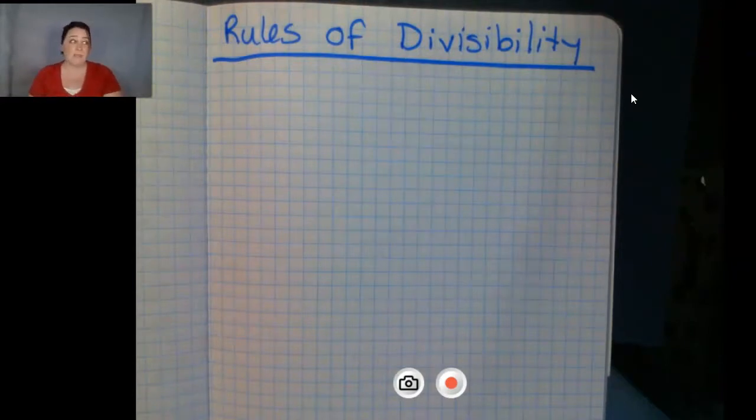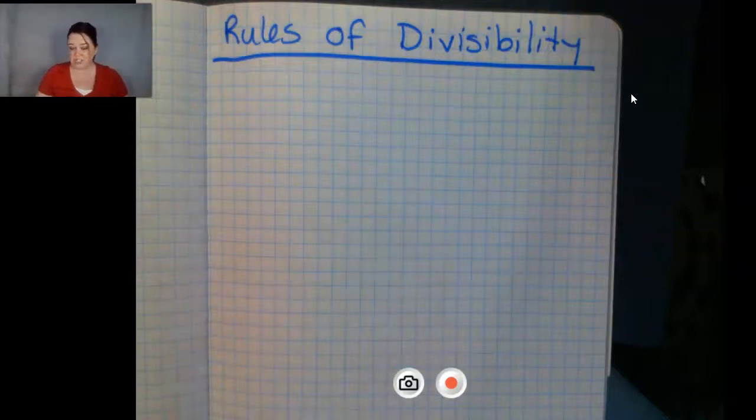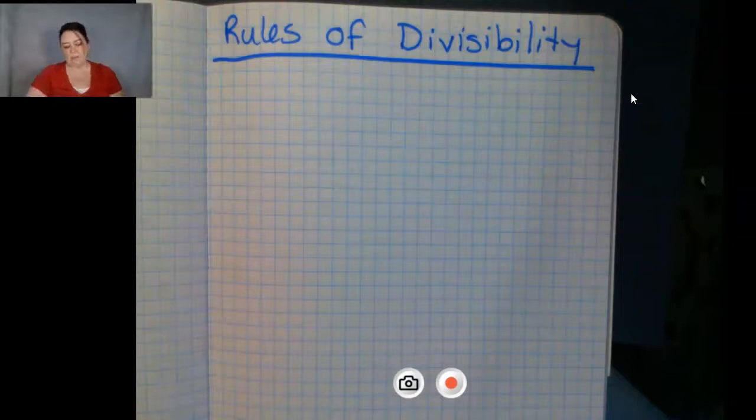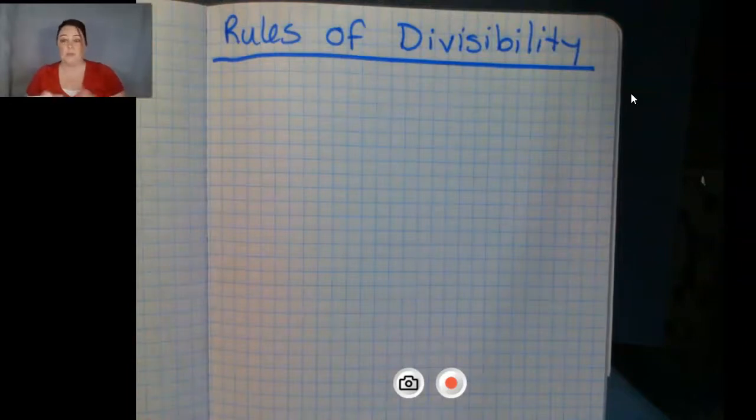Why do I teach this? Mainly it has to do with the fact that we're going to be starting fractions and we're going to be reducing a lot of fractions and we're going to be finding factors of numbers and finding a common denominator. And knowing these rules of divisibility really, really helps.